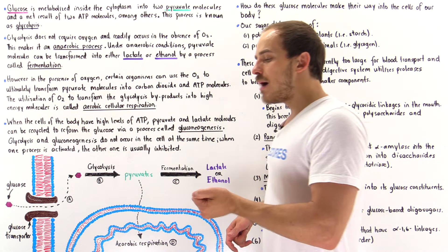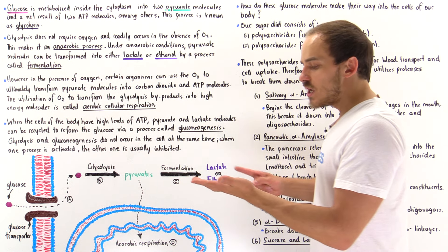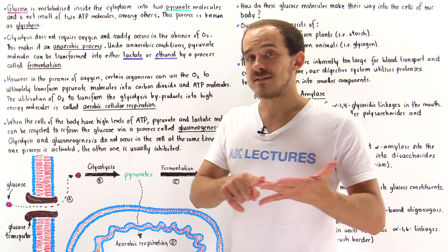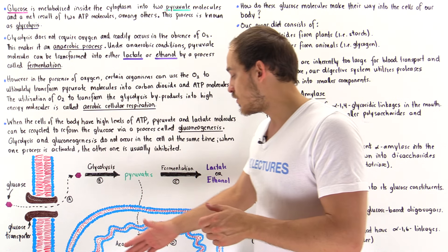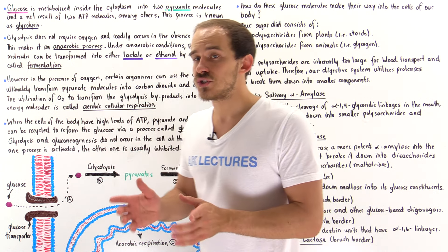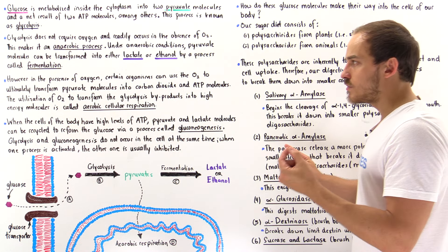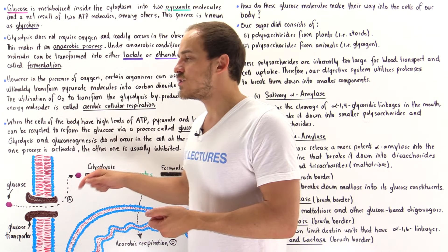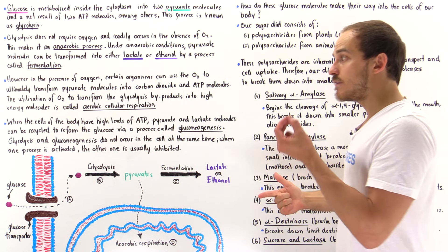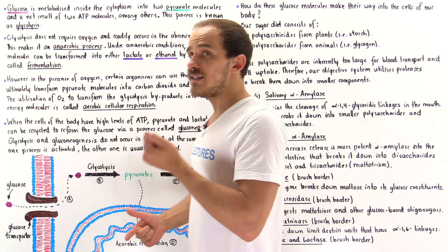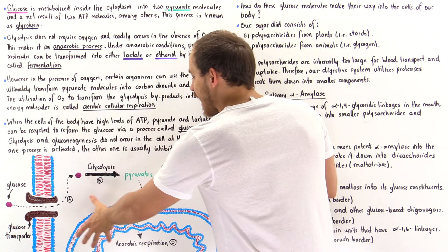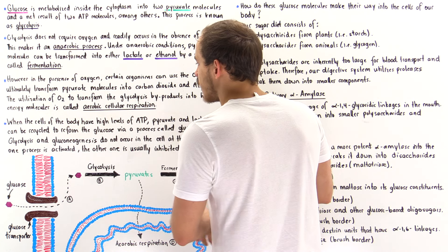Inside the mitochondria, we have processes such as pyruvate decarboxylation as well as the citric acid cycle. The electron transport chain found on the inner membrane of the mitochondria uses those oxygen molecules to ultimately transform the pyruvates into carbon dioxide molecules as well as ATP molecules. In fact, the majority of ATP molecules produced by our cells are formed via the processes that take place inside the mitochondria.